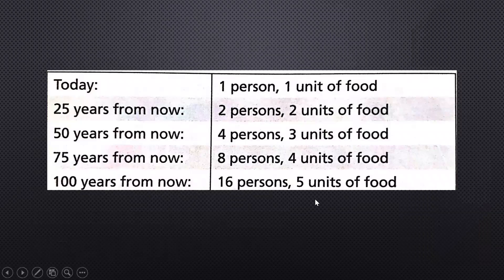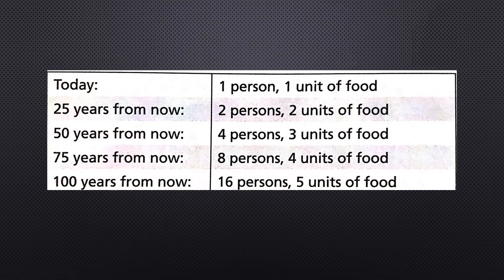He also had predictions about what would happen in the future. For example, 100 years from his time, you'd have 16 persons for only five units of food — illustrating what he was predicting about population outpacing food supply.